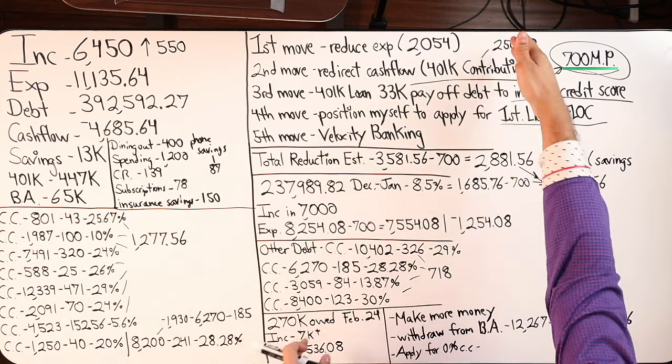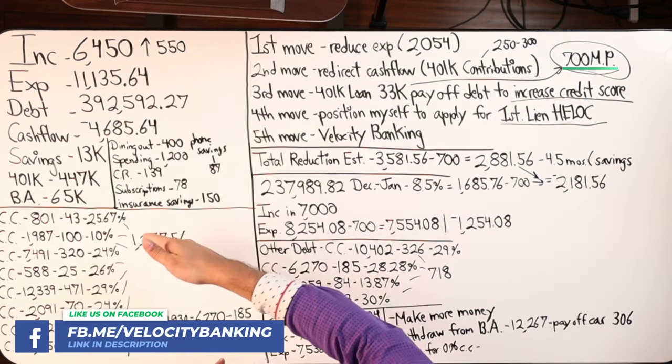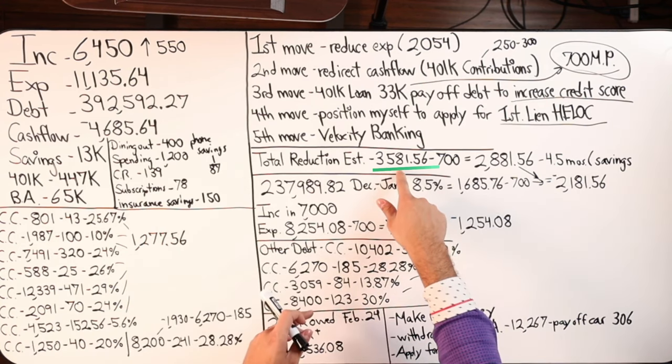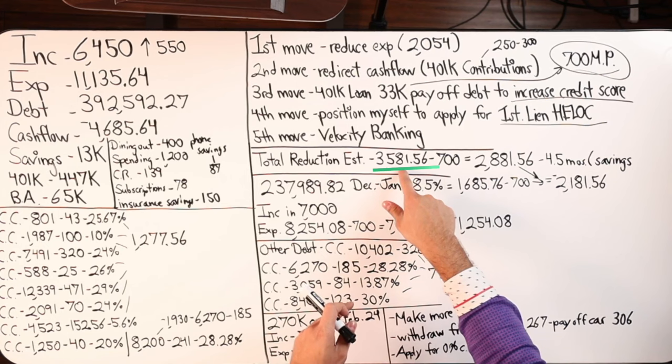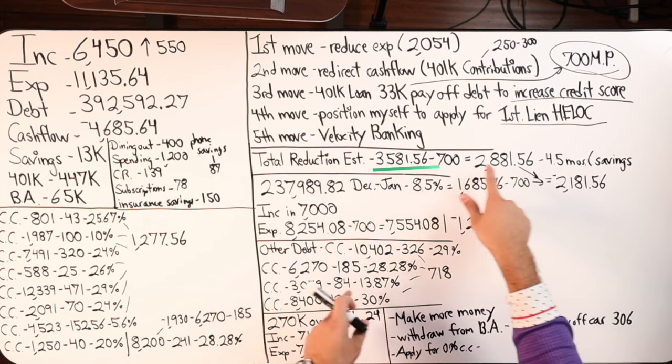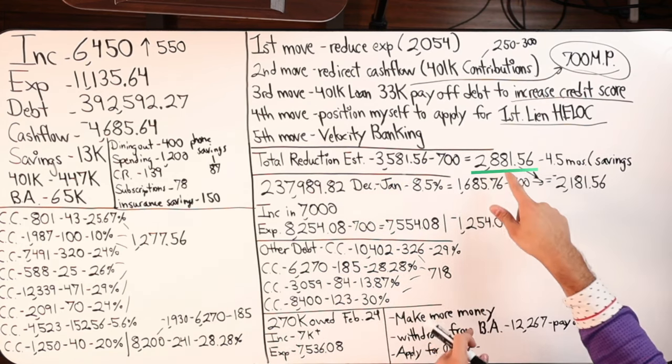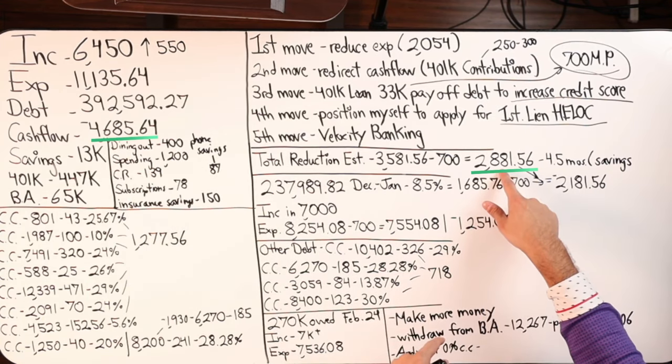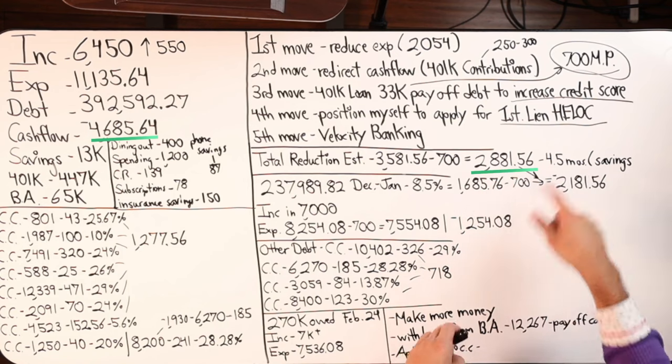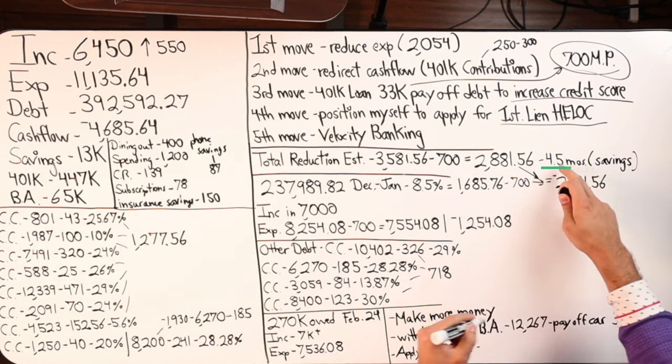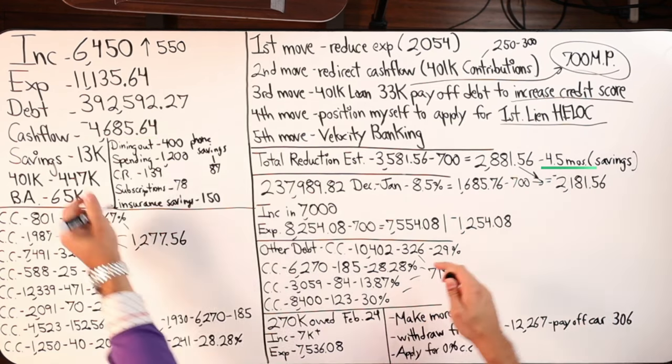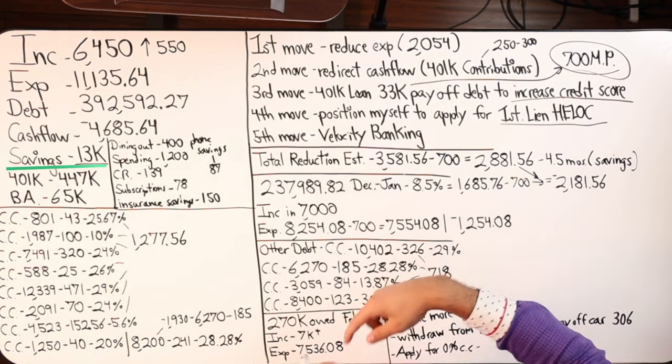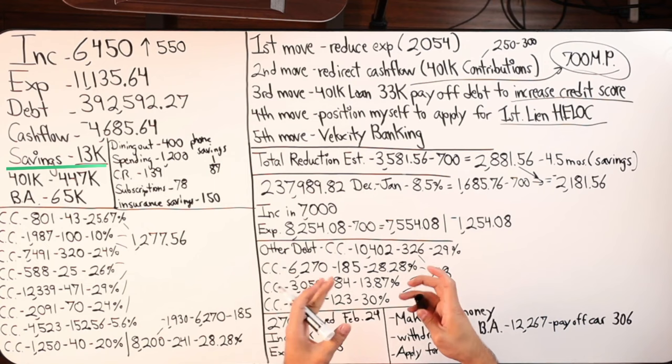Total reduction, $2,054, $1,277.56 minus $700. You should get this number, $3,581.56. You should end up right here with a negative cash flow from $4,685.64 to now down to $2,881.56, which gives us about four and a half months of the savings before I run out of cash and I'm going back into debt to pay things on time.